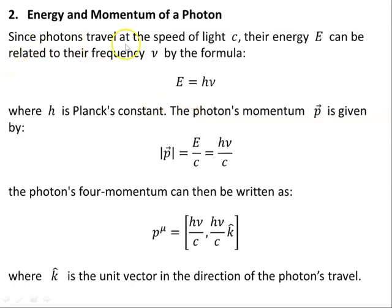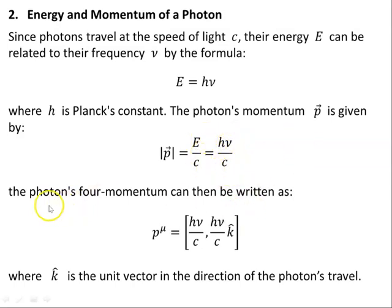So: energy, momentum, and photons. Since photons travel at the speed of light c, their energy E can be related to the frequency nu by the formula E equals h nu — Planck's constant. The photon's three-momentum magnitude is E on c, which equals h nu on c. The photon's four-momentum can then be written with time component h nu on c, and spatial part h nu on c times k-hat, where k-hat is the unit vector in the direction of the photon's travel.